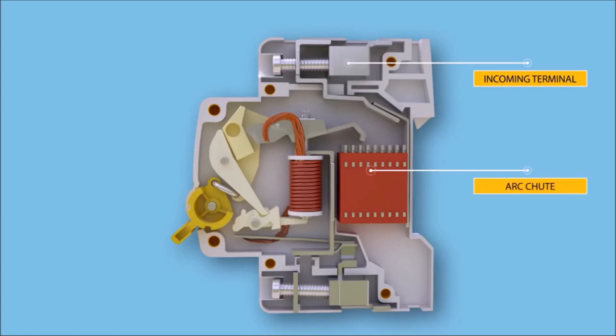The arc chute is a stack of mutually insulated parallel metal plates which divide and cool the arc.